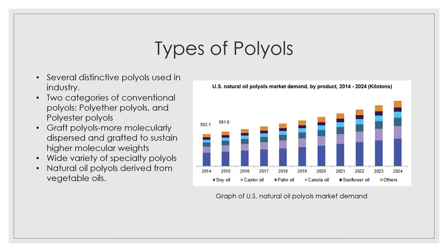Moving on, we have the different types of polyols. As previously discussed, there are two distinctive types: polyester polyols and polyether polyols. Conventional polyester polyols produce polyurethanes with much better resistance to solvents or abrasions but are generally more price heavy. There are graft polyols that are molecularly dispersed and grafted to sustain higher molecular weights. Then a various selection of specialty polyols which, as the name suggests, are not commonly synthesized. Lastly, there are natural oil polyols derived from vegetable oils, which is what we'll be spending a lot of focus on in terms of discussion.